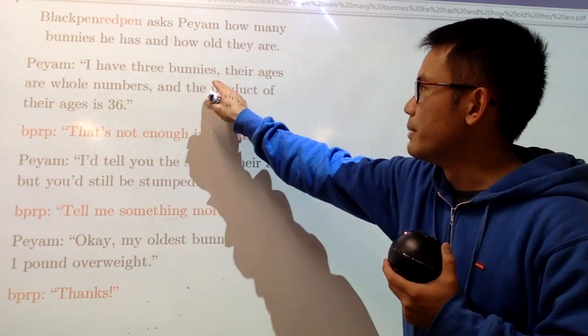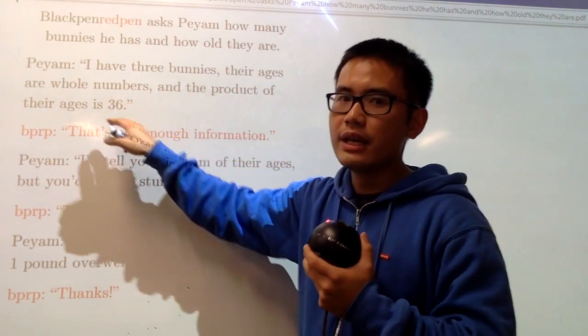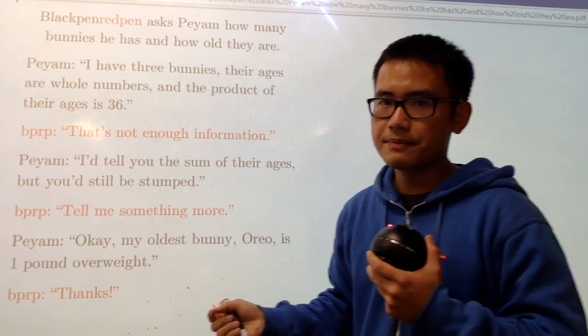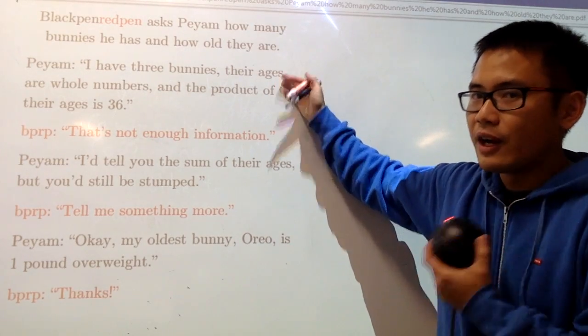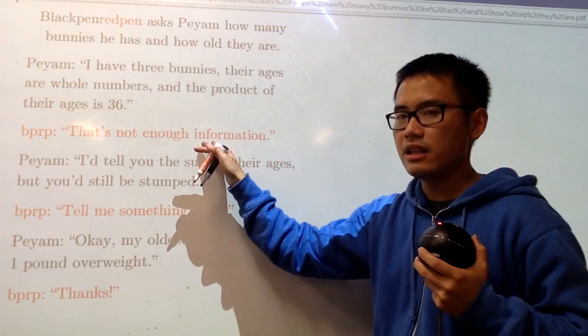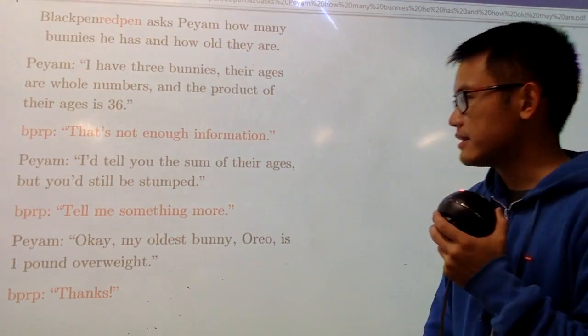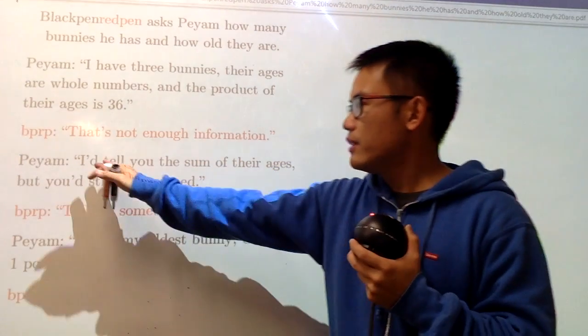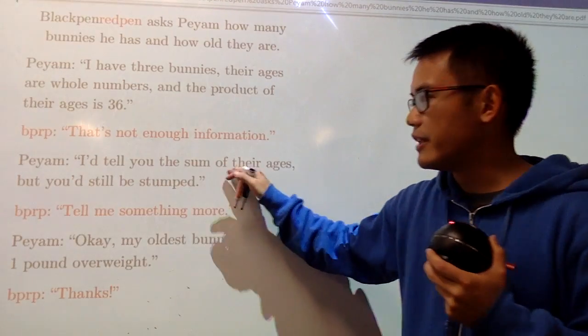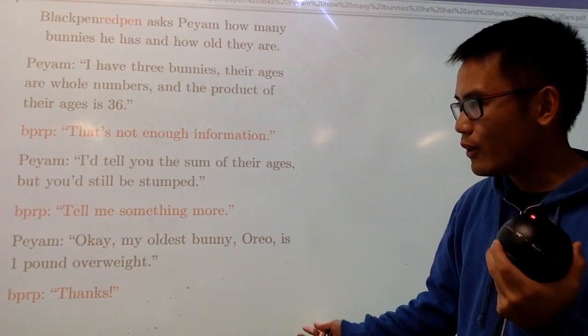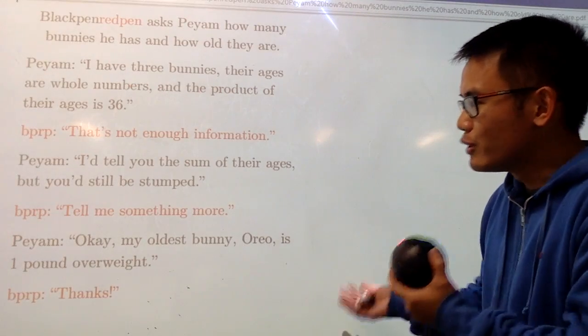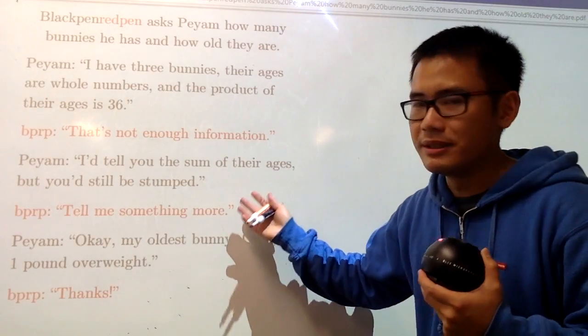I'm going to ask Pyem, how many bunnies does he have and how old they are? He says he has three bunnies and their ages are whole numbers and the product of their ages is 36. Well, unfortunately, based on just this, I cannot figure out their ages because that's just not enough information. Next, he tells me that even though he tells me the sum of their ages, I will still not be able to figure it out. Well, in that case, I will just have to ask him, please tell me something more.